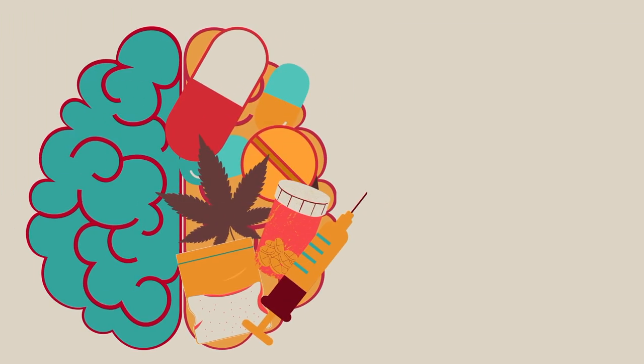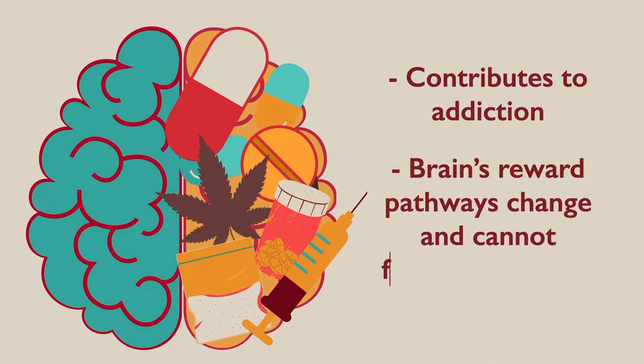In this way, maladaptive structural plasticity can contribute to the development of addiction. The brain changes to the point that without the drug, its reward system is not able to function properly, leading to drug cravings and compulsive use.